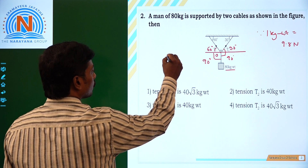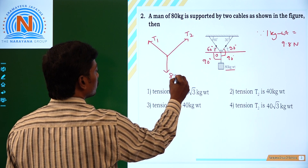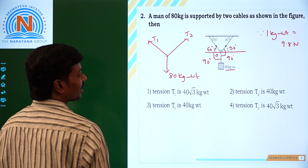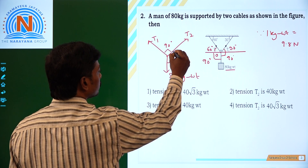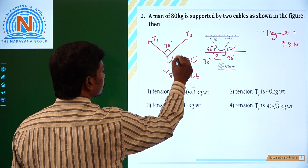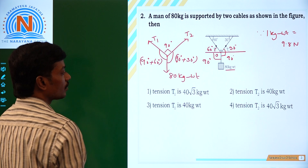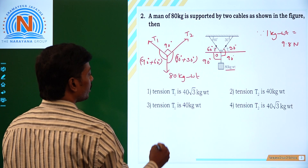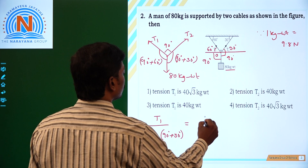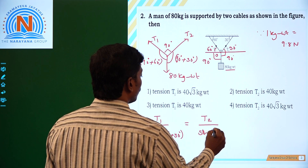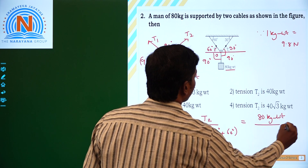If we take the three vectors: the tension T1, the tension T2 in the cable, and the weight acting in the downward direction that is 80 kg weight. The angle between T1 and T2 is 90 degrees. The angle between T2 and 80 kg weight is 90 plus 30 degrees, and the total angle between T1 and 80 kg weight is 90 plus 60 degrees. Now if we apply Lamy's theorem: T1 by sine of 90 plus 30 equals T2 by sine of 90 plus 60 equals 80 kg weight by sine 90 degrees.